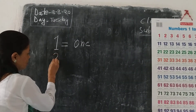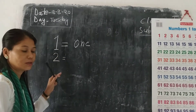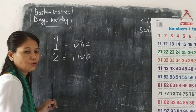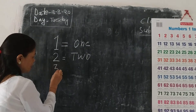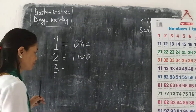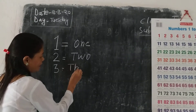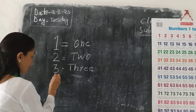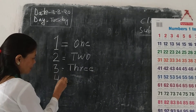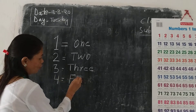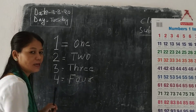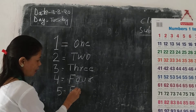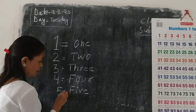And what is this? 2. This is T-W-O. 2. And what is this? 3. E-S-R-E-E. 3. And 4 — F-O-U-R. 4. And 5 — F-I-V-E. 5.